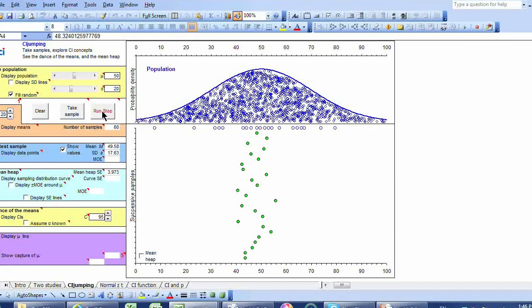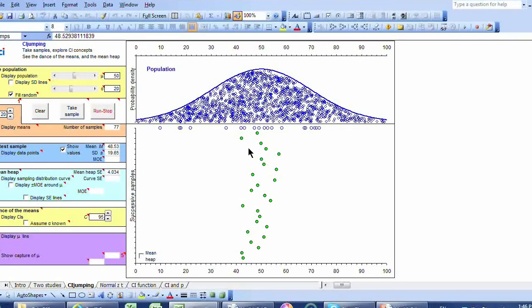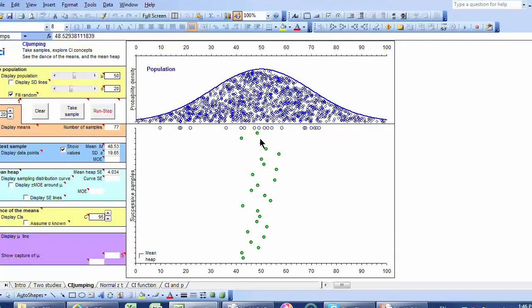And that's illustrating via simulation just the extent of the sampling uncertainty, the extent of the sampling variability from sample to sample if we take samples of size 20. OK, a question for you. Suppose we took samples of size, say, 80 instead of 20. Would this dance be quite as frenetic, or would these means vary less? Let's try it.